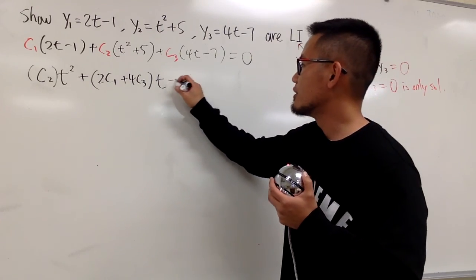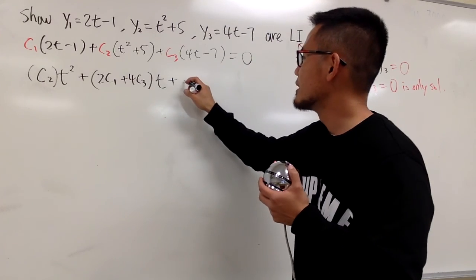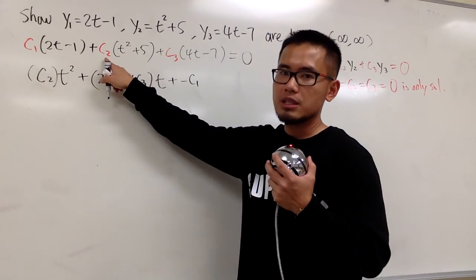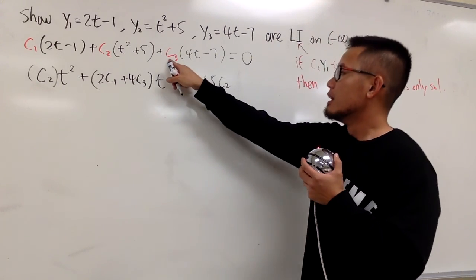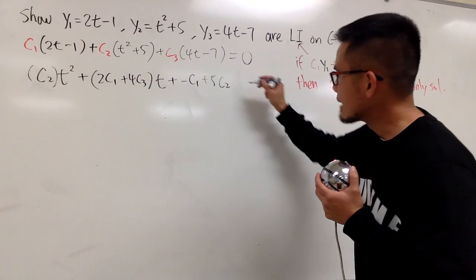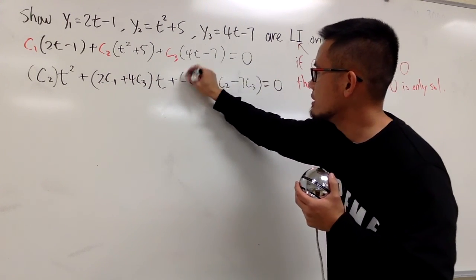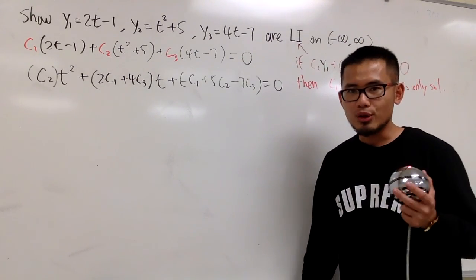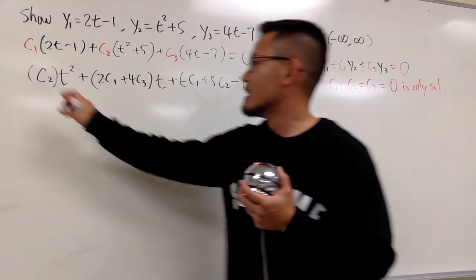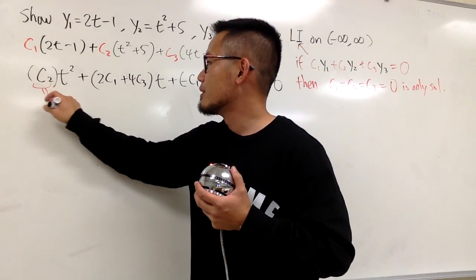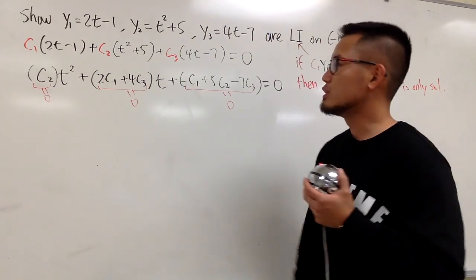At the end, we have the constant terms, and I'm just putting on adding. The first constant term is c1 times negative 1, which is negative c1. Next constant term is c2 times 5, which is plus 5c2. At the end, we have c3 times negative 7, that's minus 7c3 then, and still make this equal 0, and let's put a parenthesis around this. OK, match coefficients. The right hand side is identically 0, right? That means this right here has to be 0, this right here should also be 0, and this right here should also be 0, isn't it?